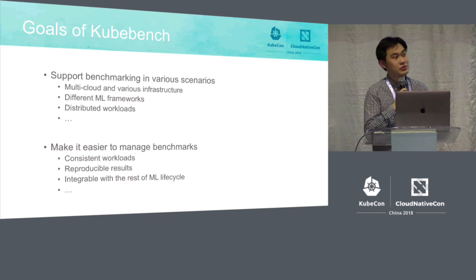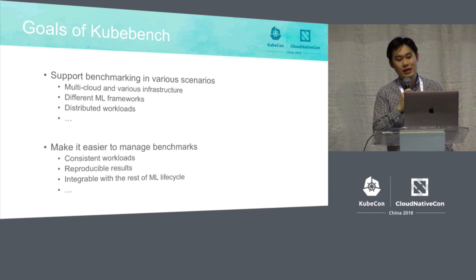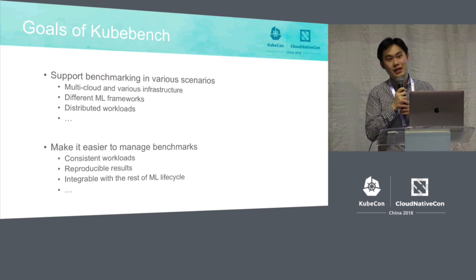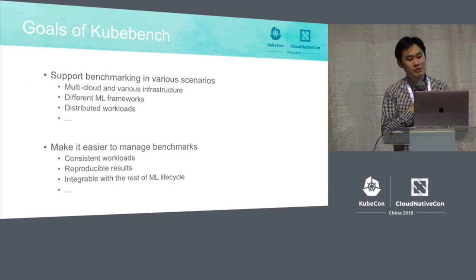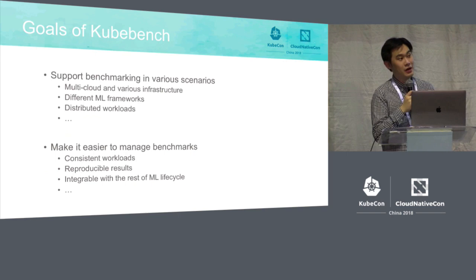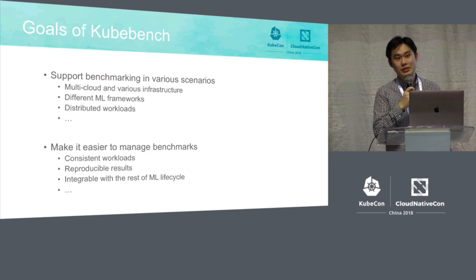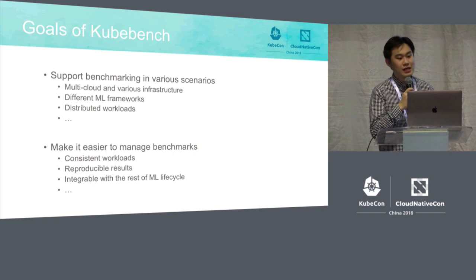One is that we want to support benchmarking in various scenarios. For example, we want to be able to run benchmarks in multi-cloud — we don't want to be locked into a single cloud provider. Also, data scientists are using different machine learning frameworks such as TensorFlow, PyTorch, and MXNet, so a good benchmark suite should be able to support different machine learning frameworks. And when we run large-scale training jobs, we would like to understand our system performance on distributed workloads.